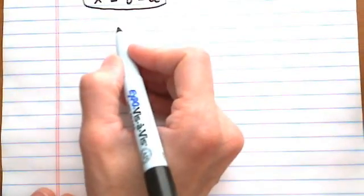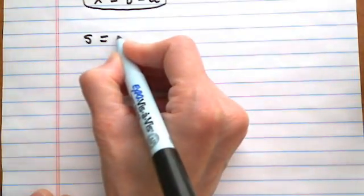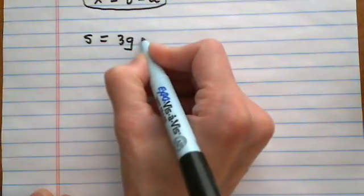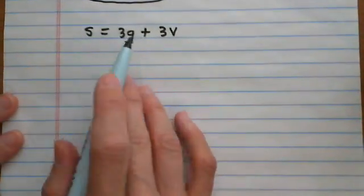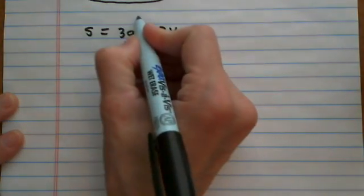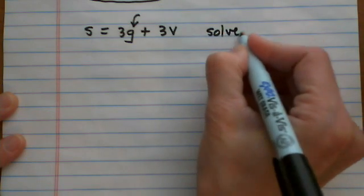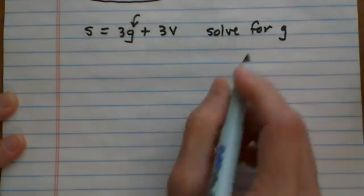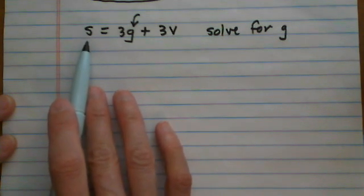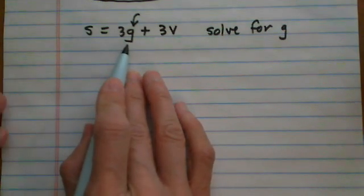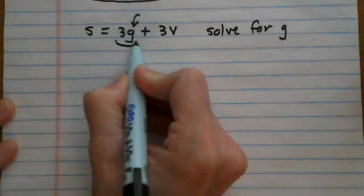Now let's try something with a bit more happening. We'll use some different variables this time. Let's solve for g. When solving for g, we're going to treat every other letter or variable like just a number and do whatever we would do to a number.